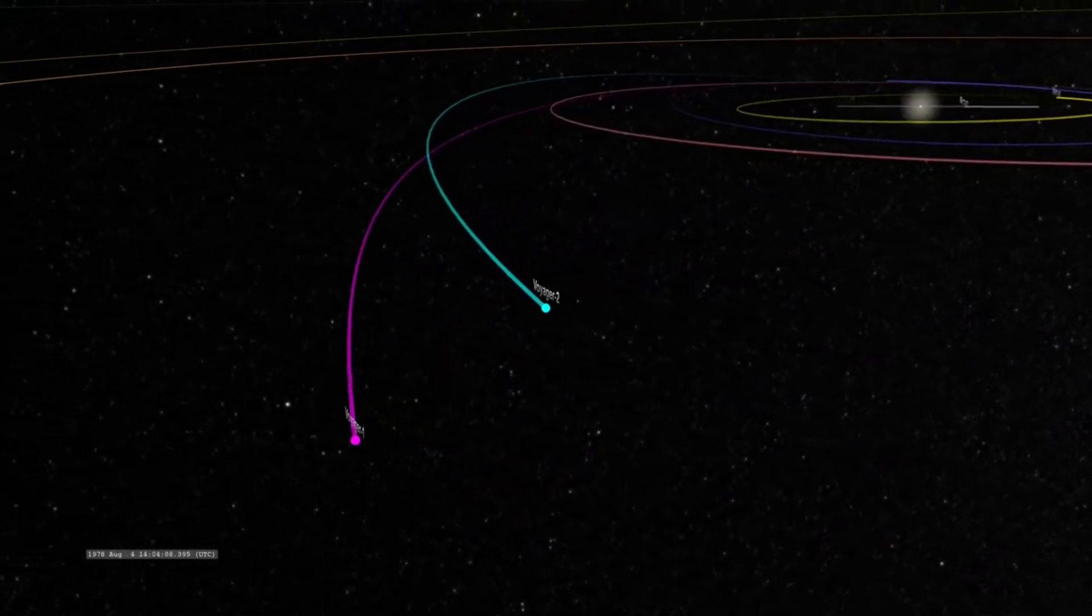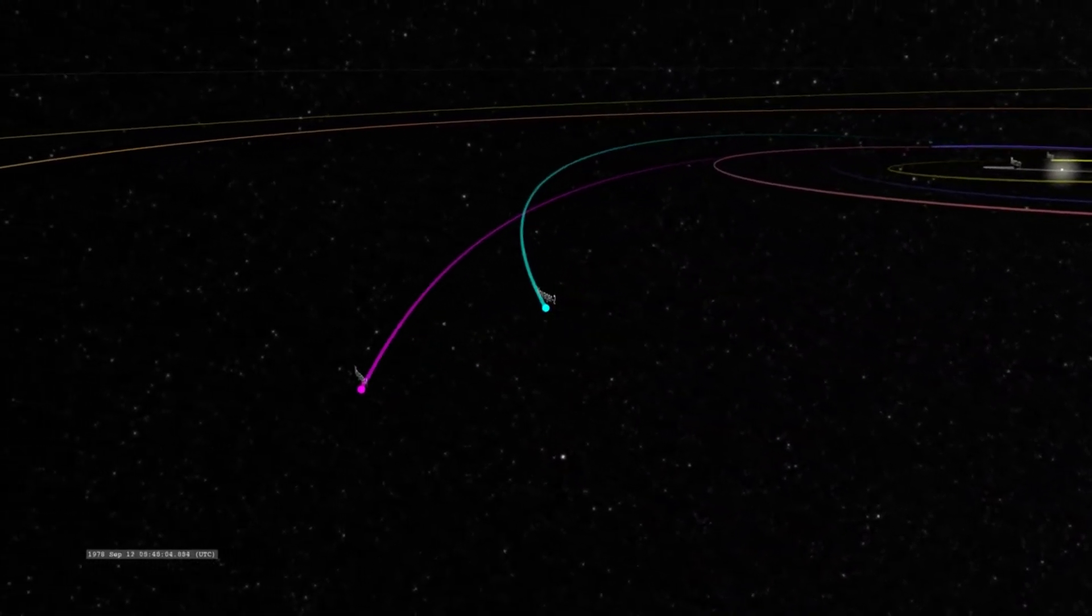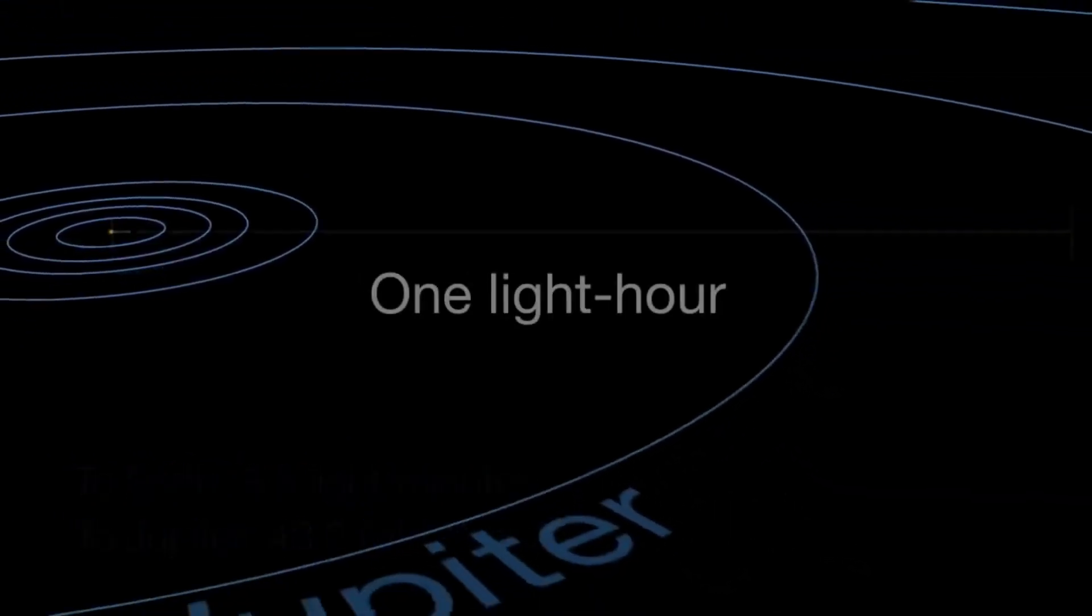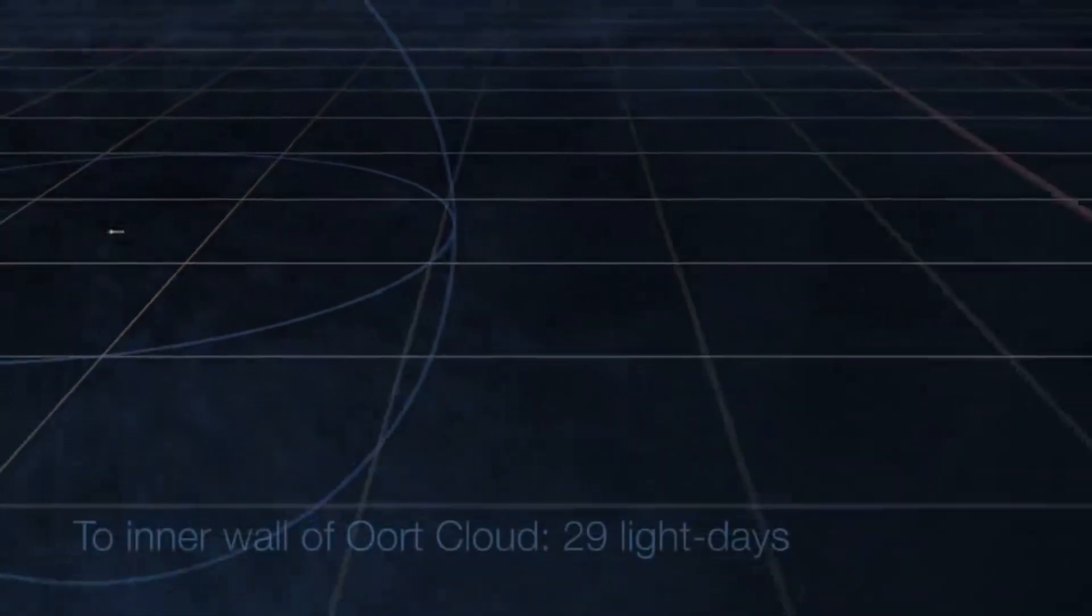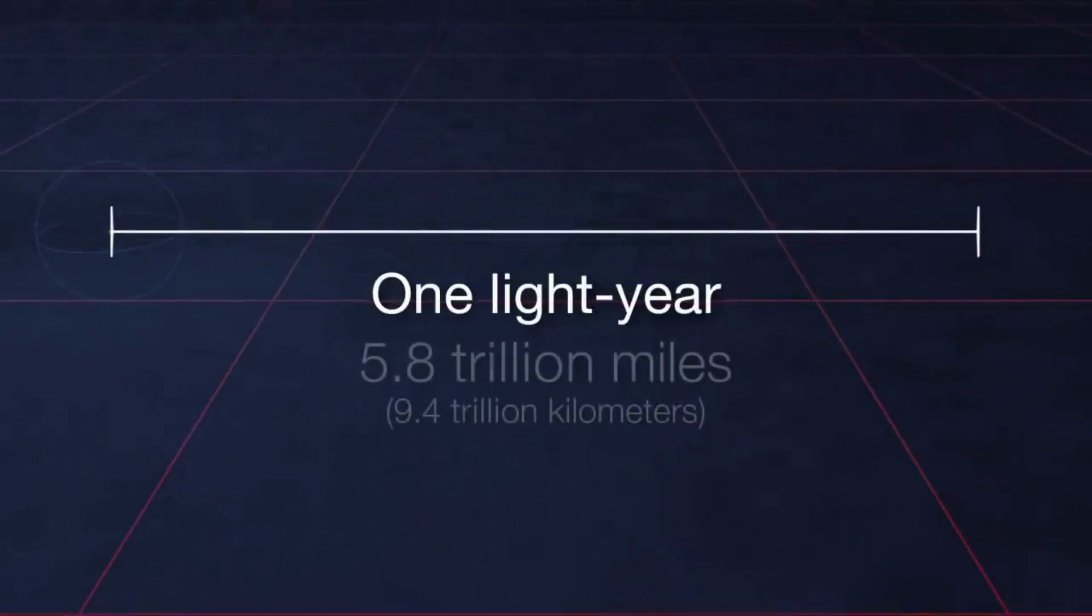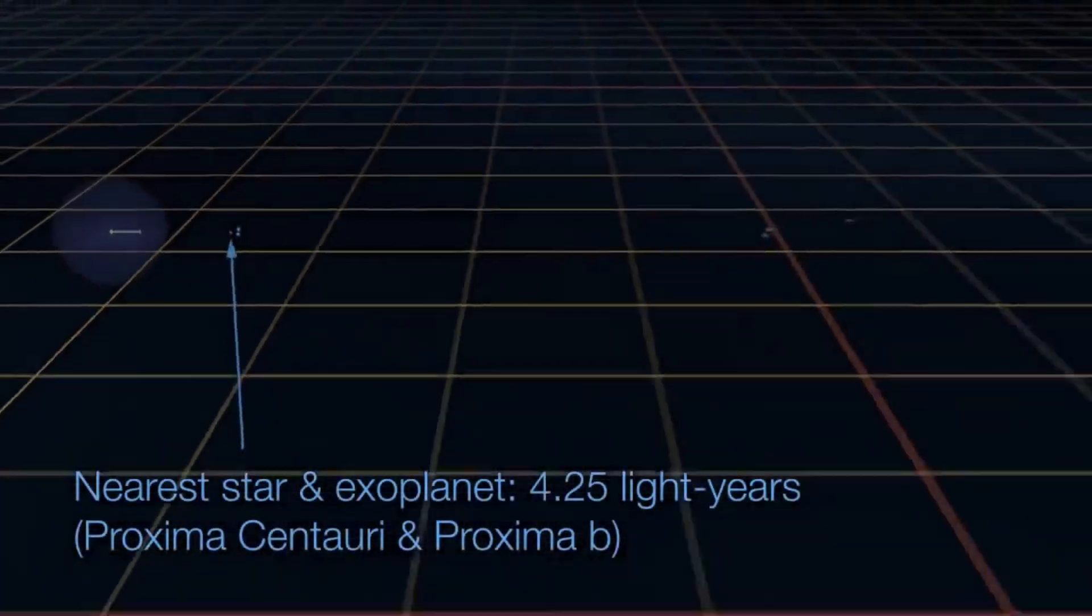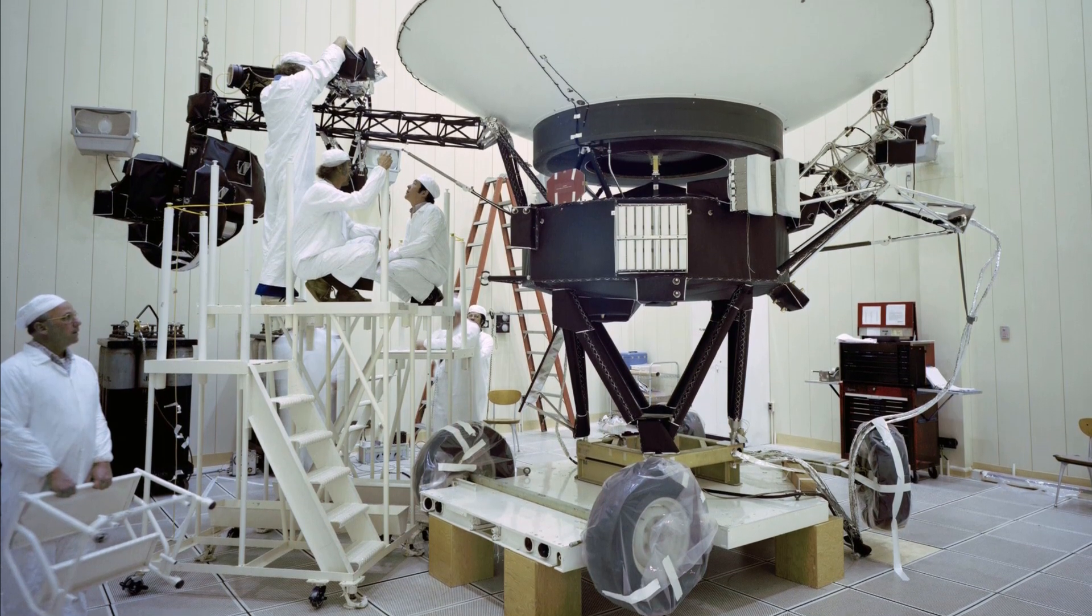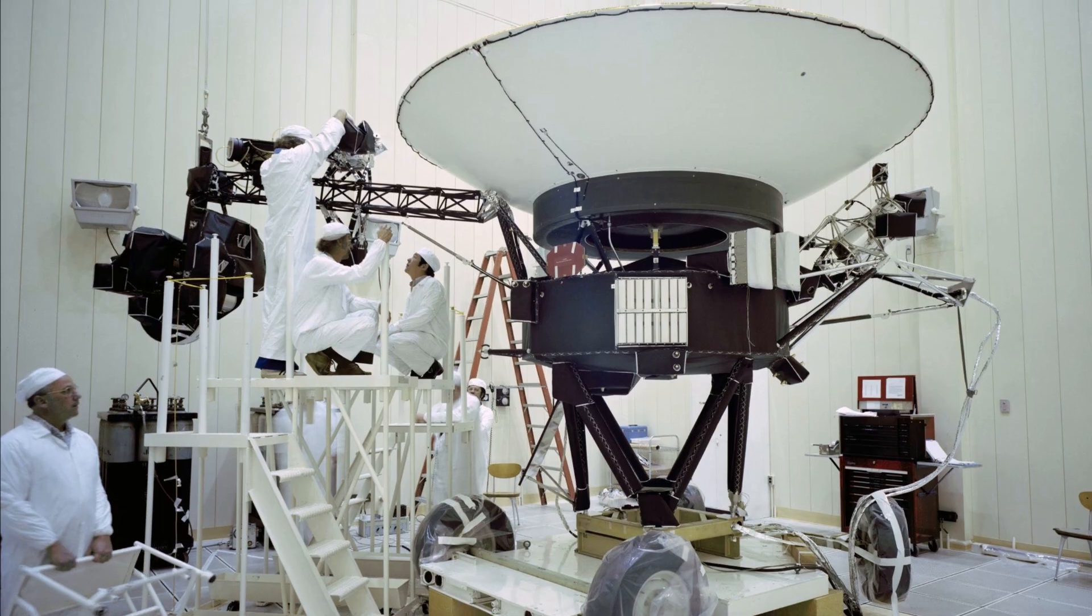While the probes have left the heliosphere, Voyager 1 and Voyager 2 have not left the solar system and won't be leaving anytime soon. The boundary of the solar system is considered to be beyond the outer edge of the Oort cloud, a collection of small objects that are still under the influence of the sun's gravity. The width of the Oort cloud is not known precisely, but it is estimated to begin at a thousand astronomical units, or AU, from the sun and extend to about a hundred thousand astronomical units. One AU is the distance from the sun to the earth. It will take about 300 years for Voyager 2 to reach the inner edge of the Oort cloud and possibly 30,000 years to fly beyond it.